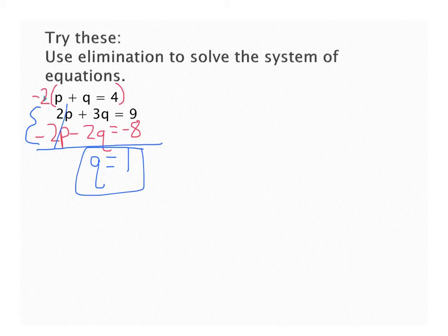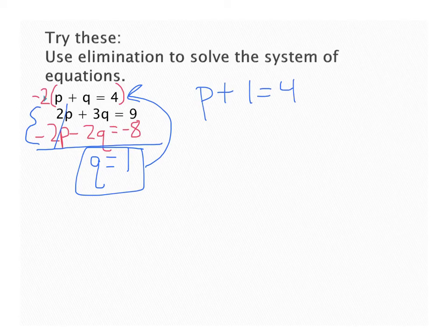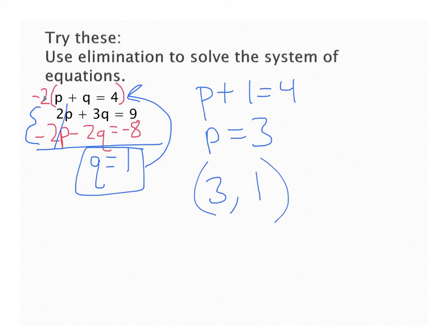To get my other solution, I'll just plug it back in. How about to that first equation? So I'm going to have p plus 1 equals 4. Subtract the 1, I get p equals 3. So my ordered pair is going to be 3 comma 1. Remember, alphabetical order. p comes before q in the alphabet.